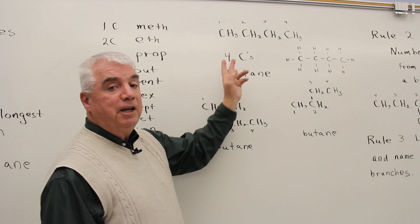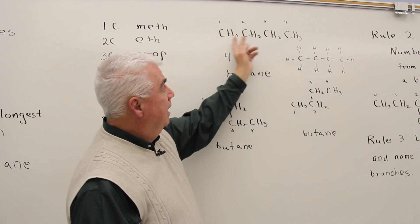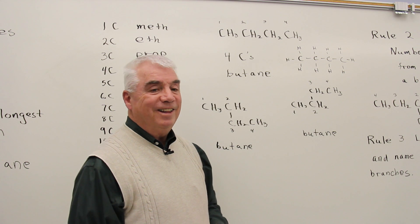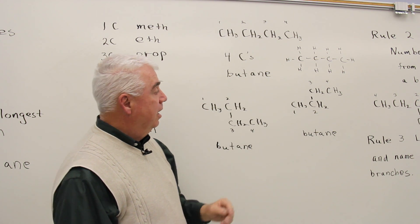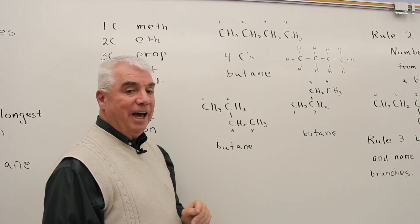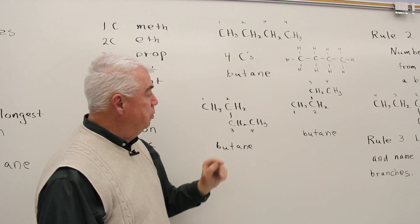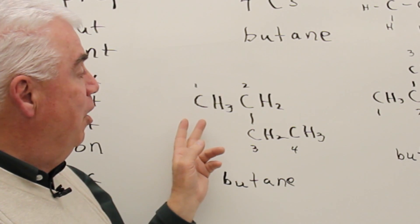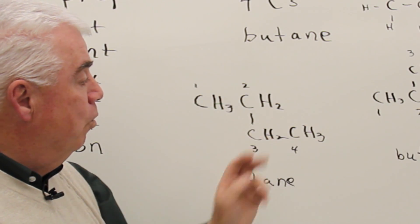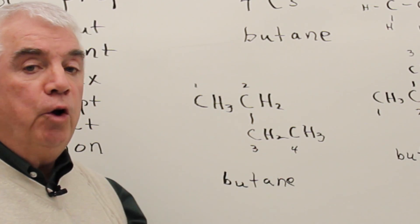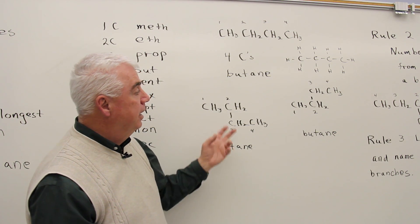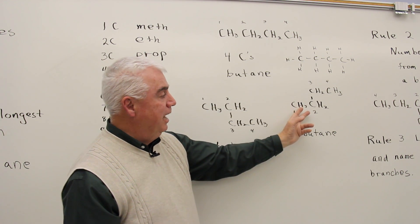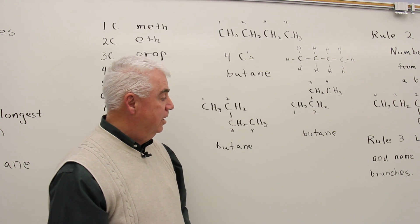An important thing to remember is that sometimes the structures are not indicated in the horizontal direction. They can zig and zag. This would still be butane if we were to number those carbons, one, two, three, four. Because you know in solution the bonds are rotating and twisting and turning, and this too would be a butane. One, two, three, four carbons.